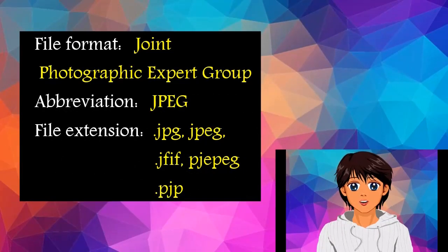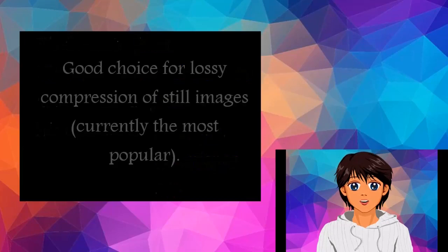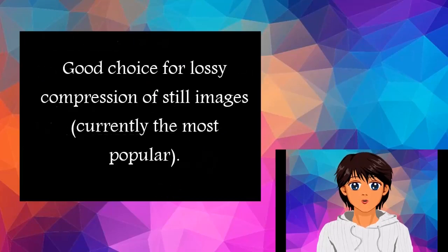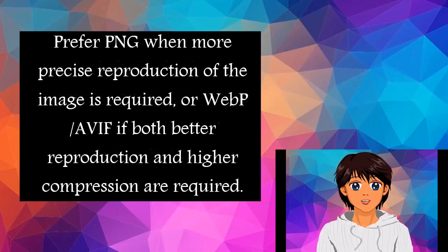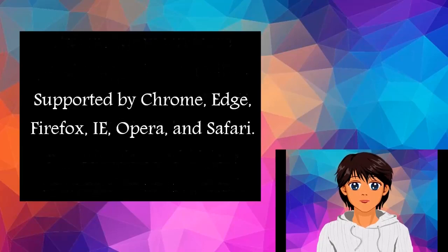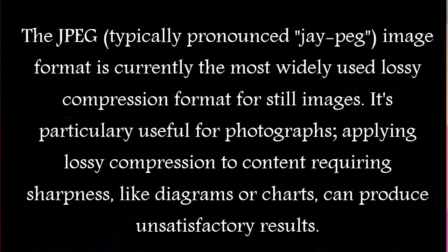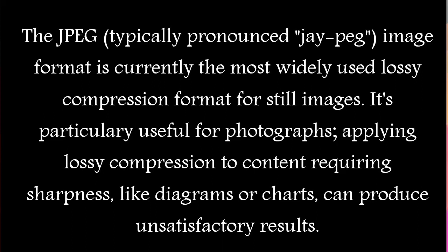Fourth, Joint Photographic Experts Group Image (JPEG) — a good choice for lossy compression of still images, and currently the most popular. Prefer PNG when more precise reproduction of the image is required, or WebP/AVIF if both better reproduction and higher compression are required. Supported by Chrome, Edge, Firefox, IE, Opera, and Safari. The JPEG format is currently the most widely used lossy compression format for still images, particularly useful for photographs. Applying lossy compression to content requiring sharpness, like diagrams or charts, can produce unsatisfactory results.